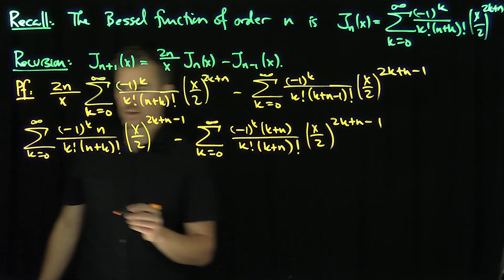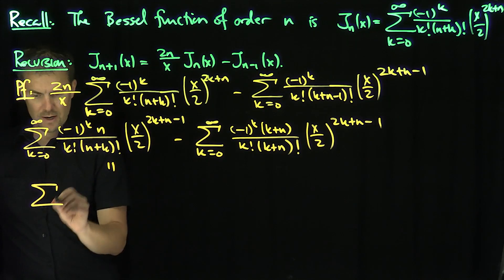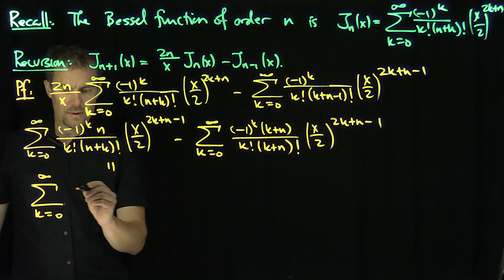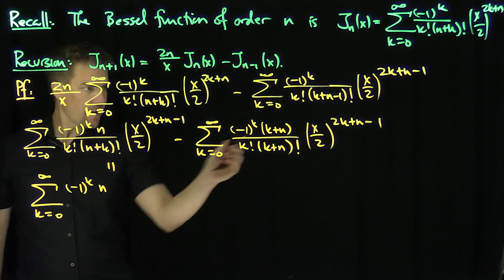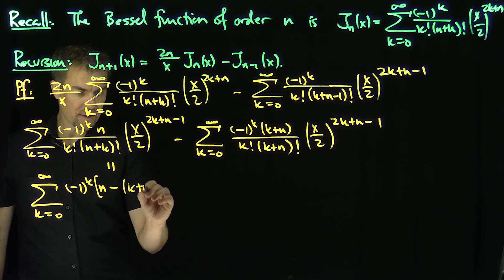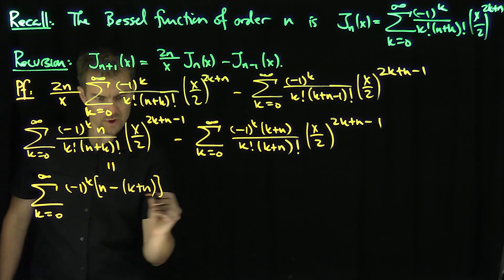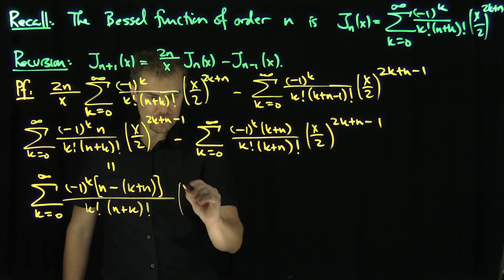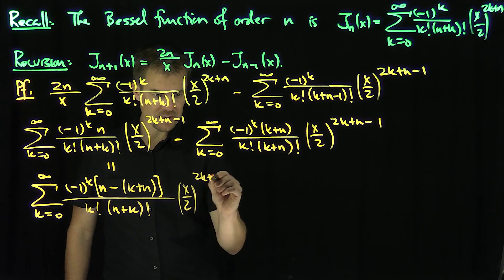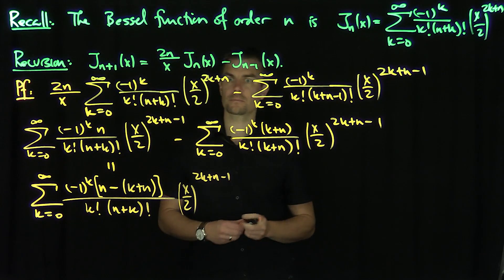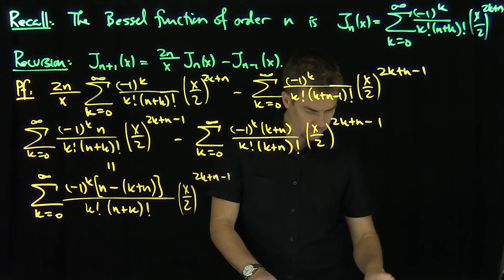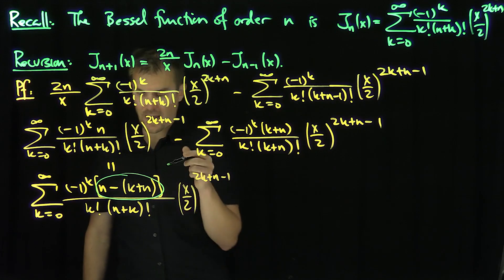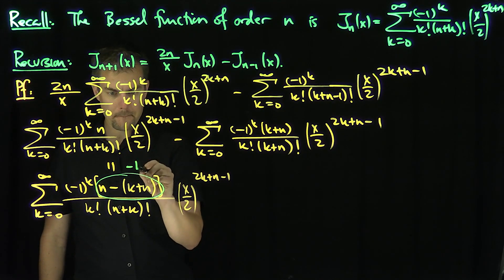Since they have the same denominator, we add the numerators together. Combined, I get the sum k from 0 to infinity of (-1)^k times (n minus (k+n)) over k! (n+k)! times (x/2)^(2k+n-1). This simplifies to just a negative k in the numerator.